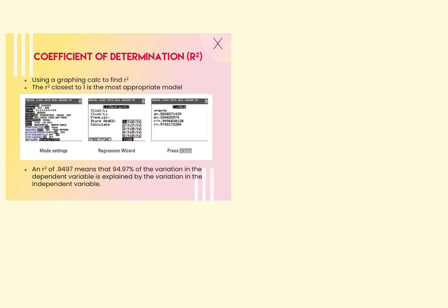To find R-squared on your calculator, go to Mode and look for stat diagnostics — it's fourth from the bottom, and it needs to be turned on. When you reset your calculator for a quiz or test, it goes back to off, just like the stat plot goes back to off, so you'll need to turn those back on. This setting is specific to finding residuals and R-squared.